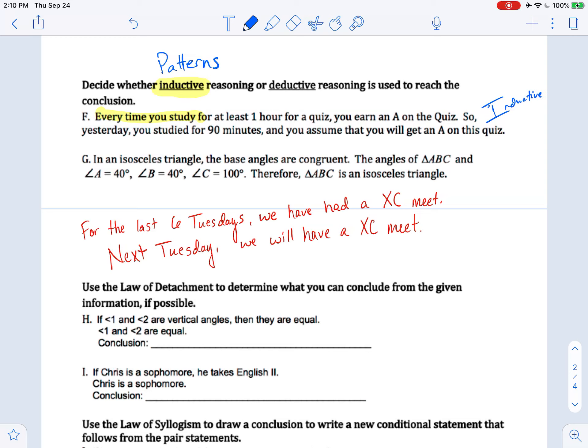So here we use the definition of isosceles triangles. We proved that triangle ABC fit those definitions. So we said ABC must be an isosceles triangle. So this would be deductive reasoning. Because we're using facts and definitions and laws of logic in order to state some conclusion.